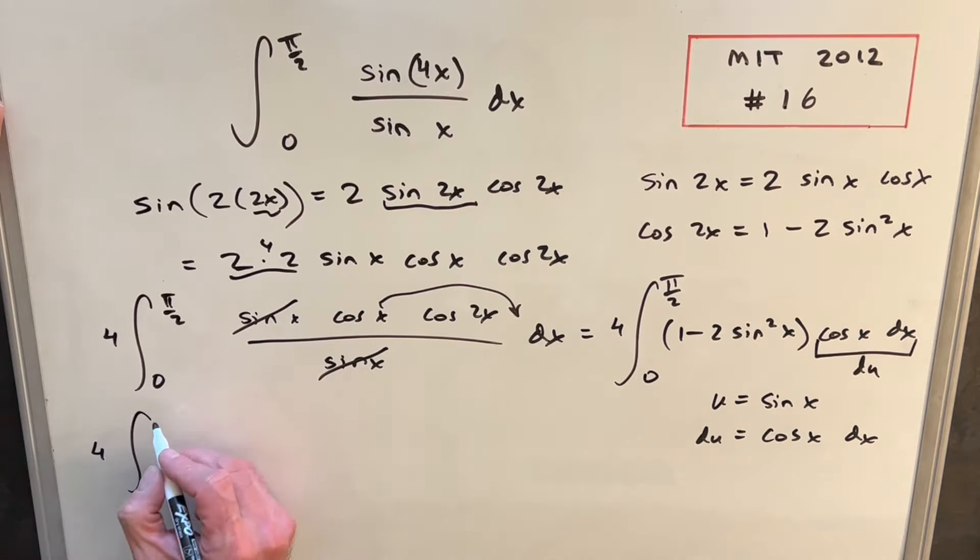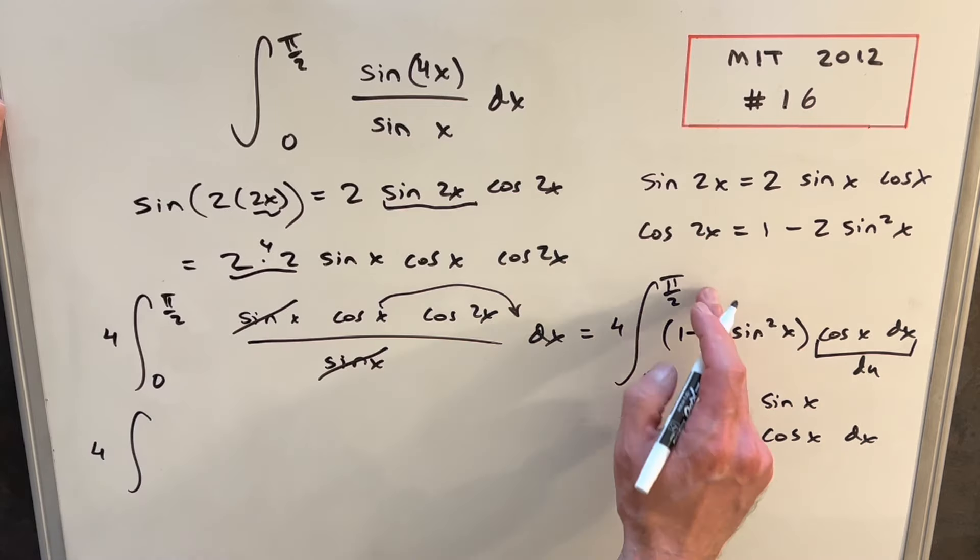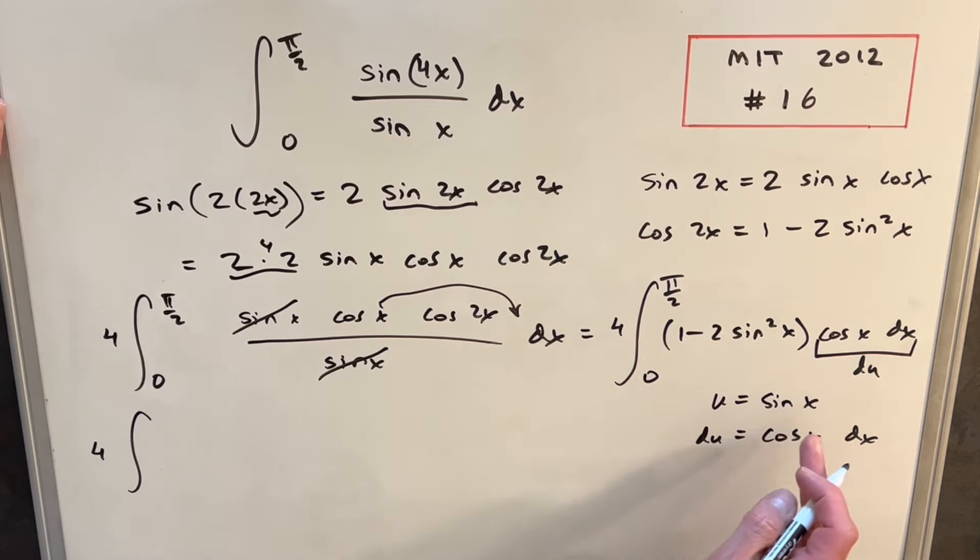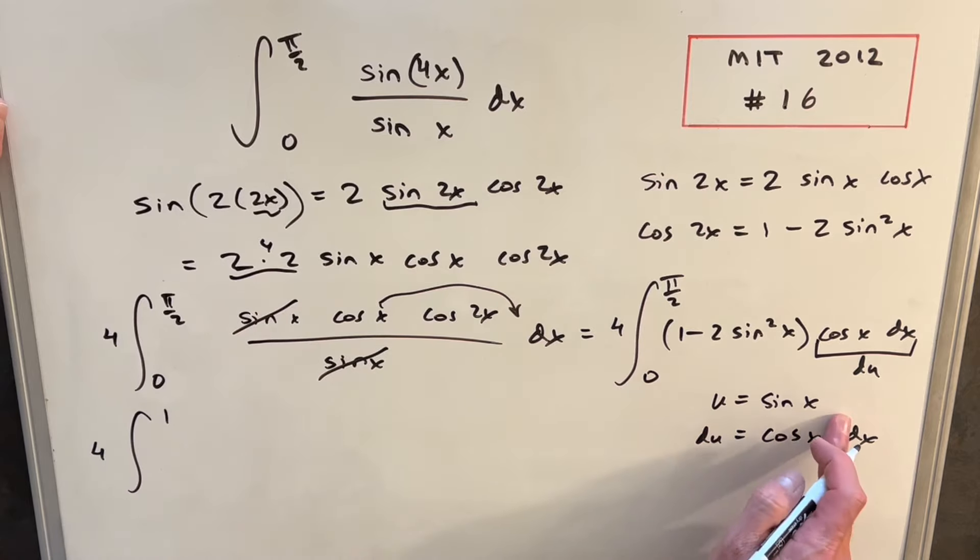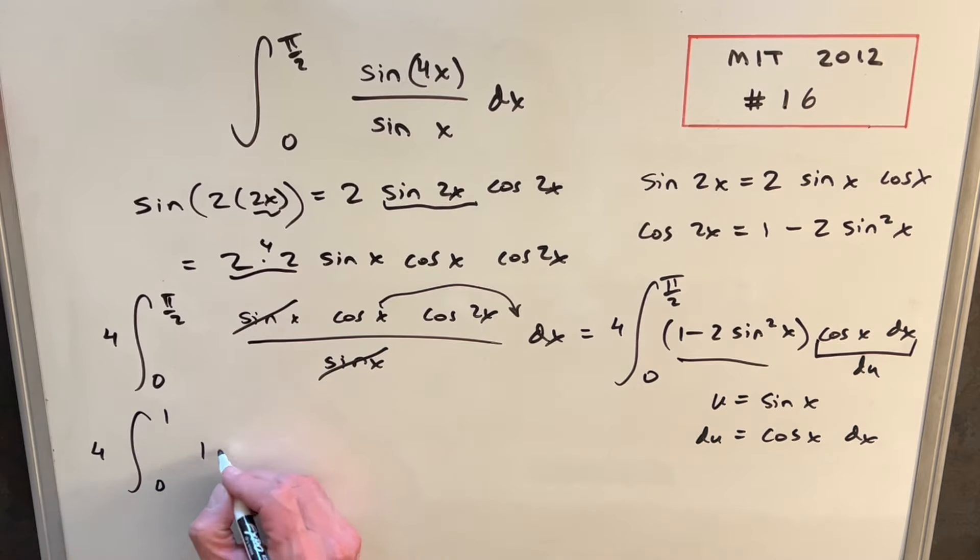So making this substitution, first we'll plug in pi over 2 into sine x. Okay, sine of pi over 2 is just 1. Then plug 0 in, sine of 0 is going to be 0. Then for this piece, making our substitution there, we're going to have 1 minus 2u squared. Then our last thing is just our cos x dx is just our du.